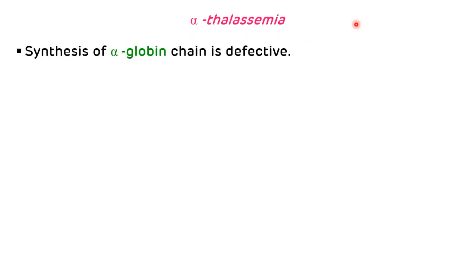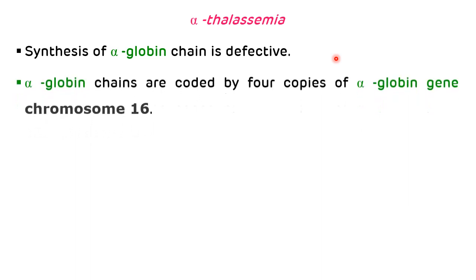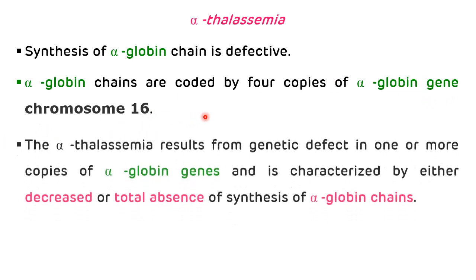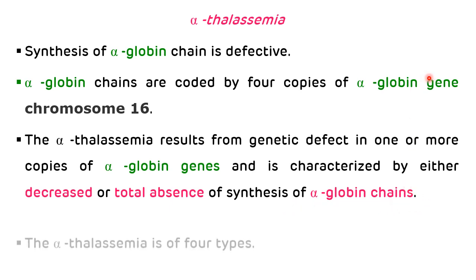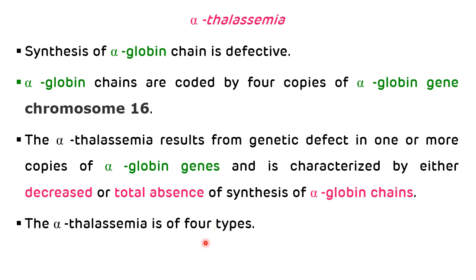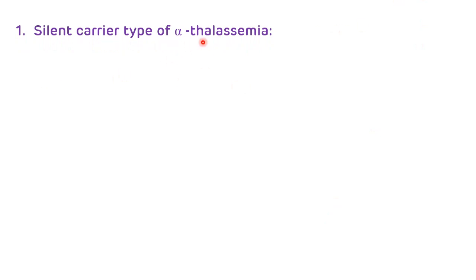First we will discuss alpha thalassemia. Alpha thalassemia occurs due to a defect in alpha globin chain synthesis. These alpha globin chains are coded by four copies of alpha globin genes located on chromosome number 16. Alpha thalassemia results from genetic defects in one or more copies of alpha globin genes and is characterized by either decreased or total absence of synthesis of alpha globin chains. Depending on that, alpha thalassemia is divided into four main types. The first is the silent carrier type.